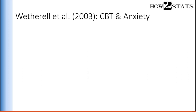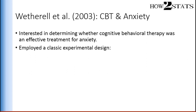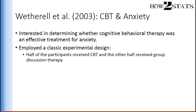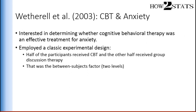Here's an example. In the textbook, I talk about the study by Weatherall et al., who were interested in evaluating the efficacy of cognitive behavioral therapy as a treatment for anxiety. They employed a classic experimental design: half of the participants were randomly assigned to receive cognitive behavioral therapy, and the other half were randomly assigned to receive discussion group therapy. That is the between-subjects element of the design, which had two levels — CBT versus discussion group therapy.